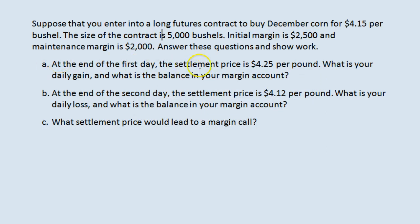At the end of the day the settlement price is $4.25 per bushel. What is your daily gain? You're in a long position so the price going up is good for you. You're obligated to buy at $4.15 something that is worth $4.25 — that's good for you. It is a gain of $0.10 per bushel, and $0.10 per bushel times 5,000 bushels in the contract is $500.